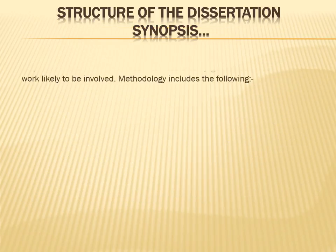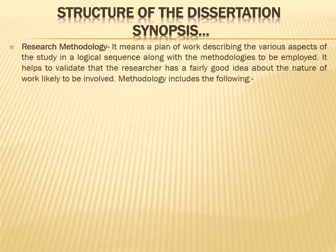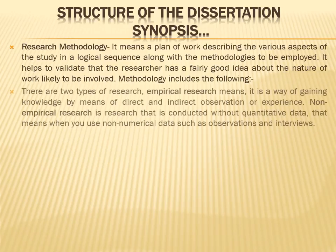The last part of the synopsis structure is research methodology — a plan of work describing the various aspects of the study in a logical sequence along with the methodologies to be employed. It helps validate that the researcher has a good idea about the nature of work likely to be involved. Methodology includes two types: empirical research, which means gaining knowledge by means of direct or indirect observation or experience; and non-empirical research, conducted without quantitative data — using non-numerical data such as observation and interviews.